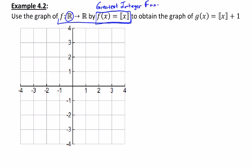We're supposed to use that graph to help us obtain the graph of g(x). Notice that g(x) also has the greatest integer function in it, but it also has the plus one. So it's supposed to look just like the greatest integer function, except this plus one is going to have a shift up by one unit.